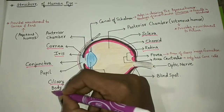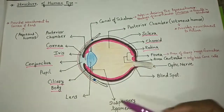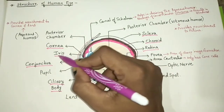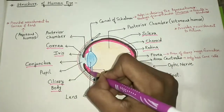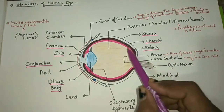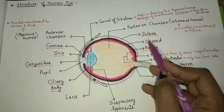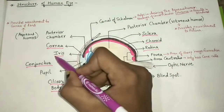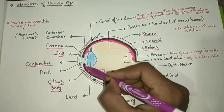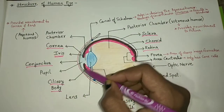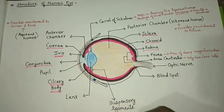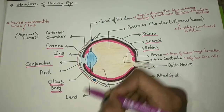The brown colored structure you see here is the iris, and the bulging part is the ciliary body. The iridial part of both choroid and retina forms the iris, and the ciliary part of both choroid and retina forms the ciliary body. The blue colored part is the lens.